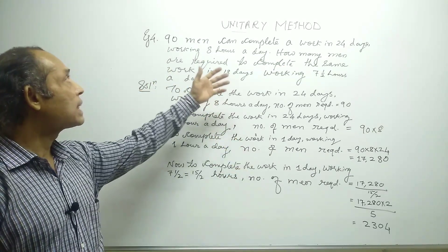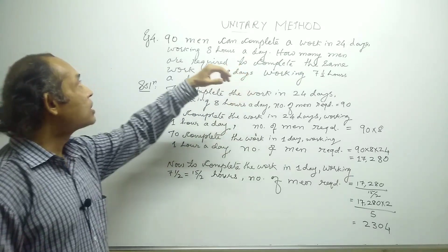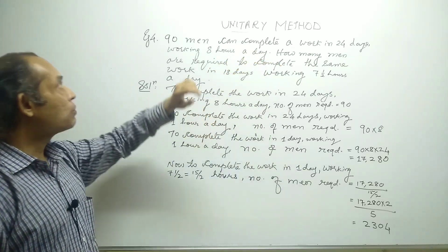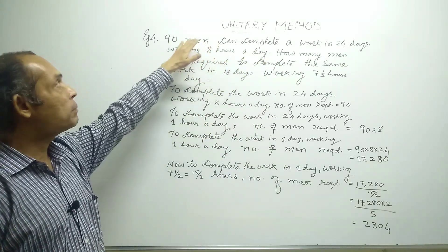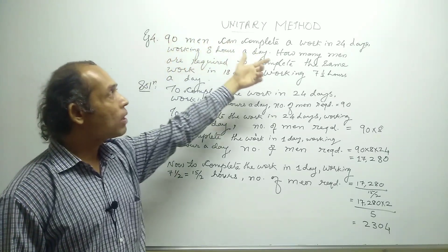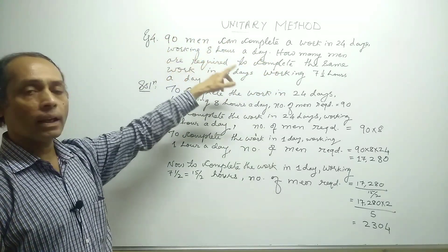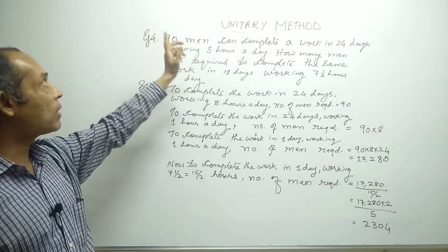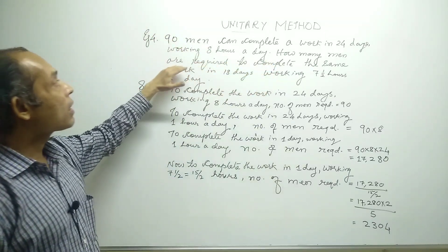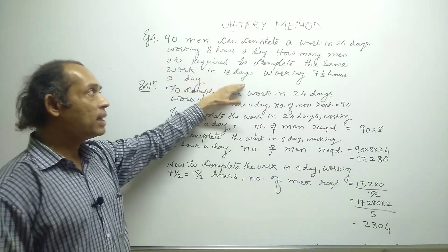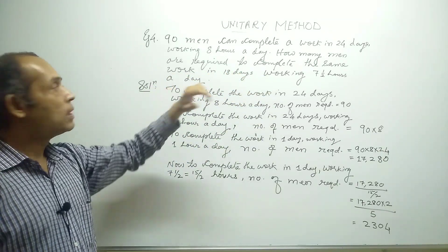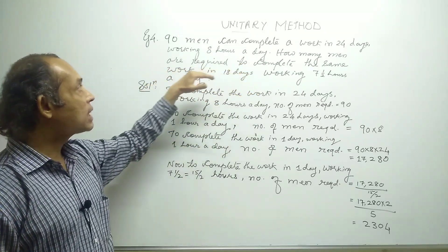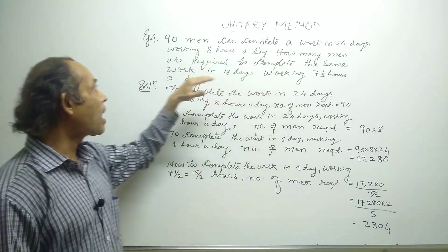Now let us look at example four — a real-life situation. 90 men can complete a work in 24 days working 8 hours a day. They require 24 days, working 8 hours per day, to complete the work. How many men are required to complete the same work in 18 days working seven and a half hours a day?